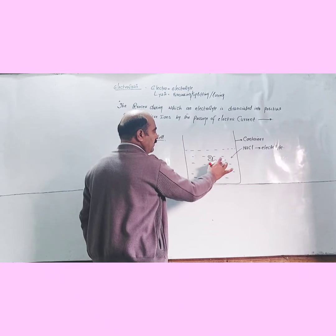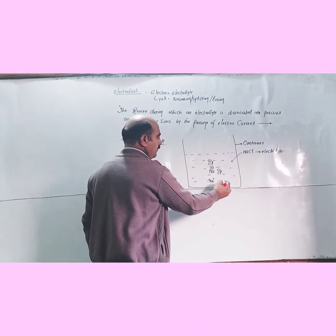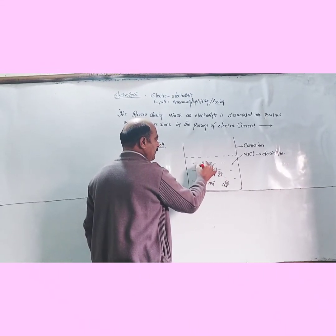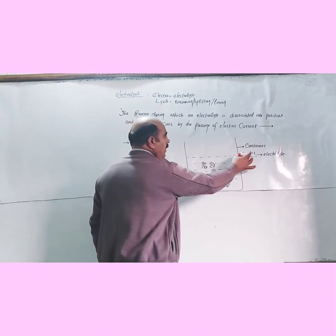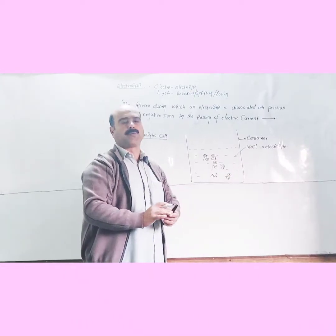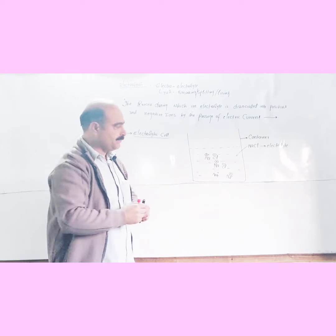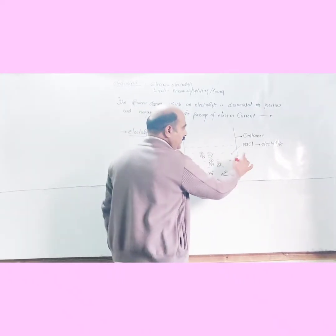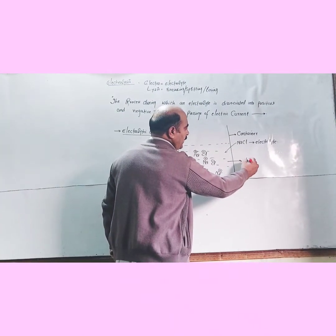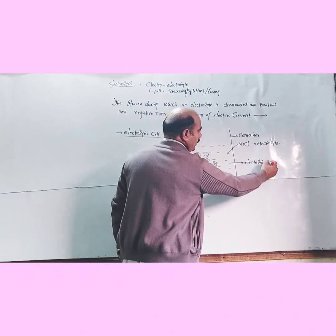One mole of sodium chloride provides one mole of sodium ions and one mole of chloride ions. This ionic mixture forms the electrolytic solution used in the electrolytic cell.